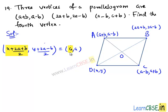Equating the x-coordinates, we get (x + 2a+b)/2 equals a. And equating the y-coordinates, we get (y + 2a-b)/2 equals a.